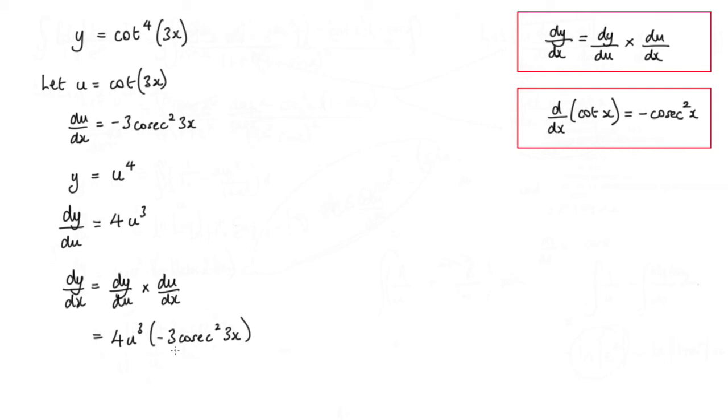The other thing left to do is to expand this and to substitute back in for u. Let's expand first of all. So the negative 3 times the 4 will be negative 12, and we've got u cubed and we've got cosec squared 3x. And substituting back in for u, which is cot 3x, we have negative 12 cot of 3x, and that's cubed, and then cosec squared 3x.